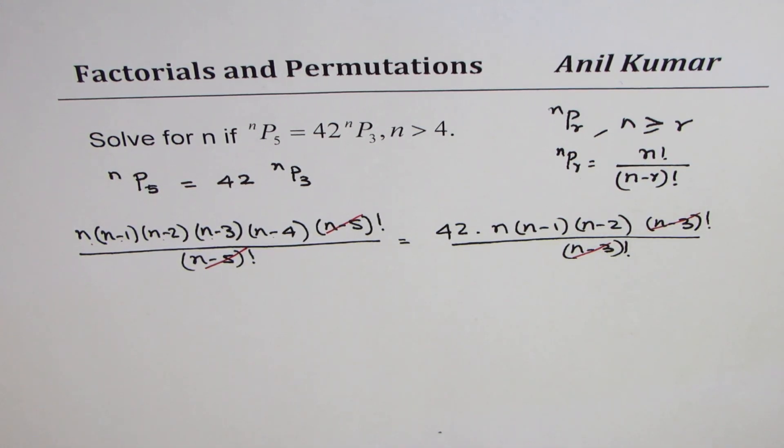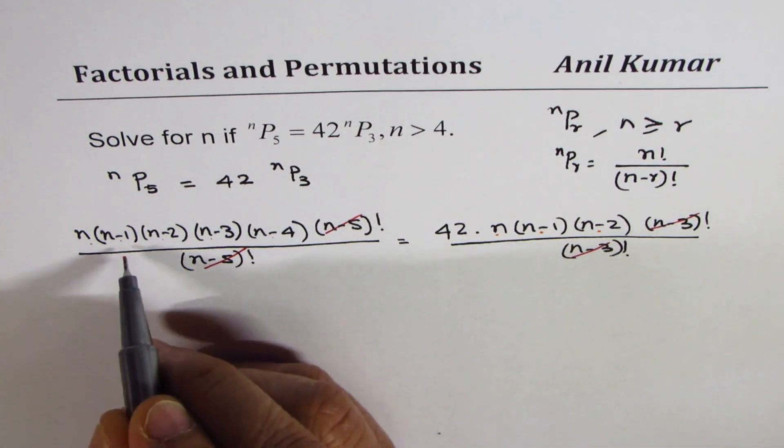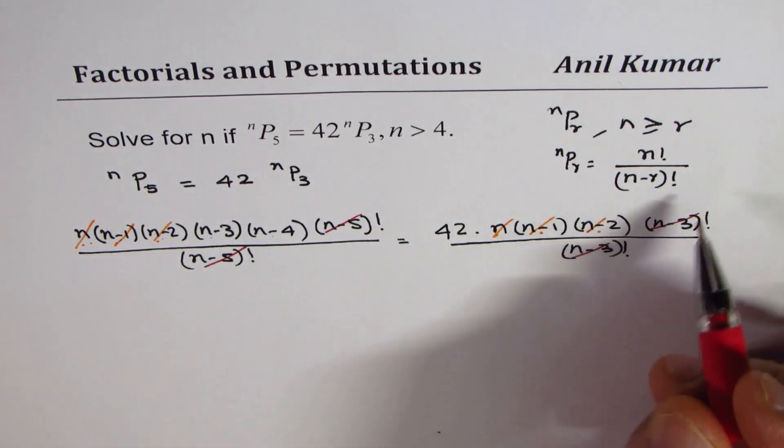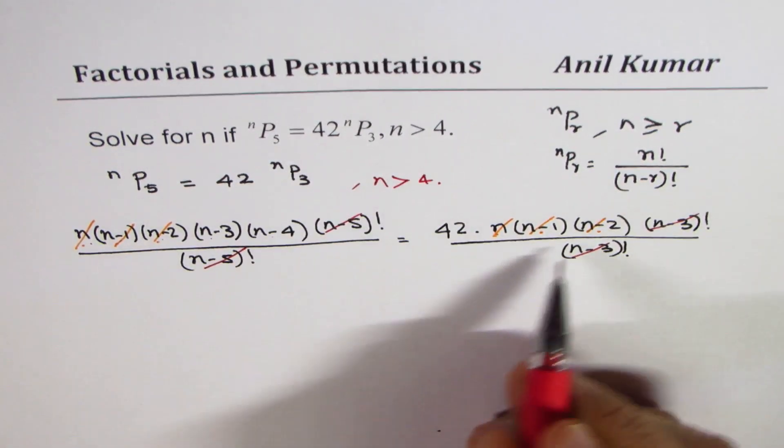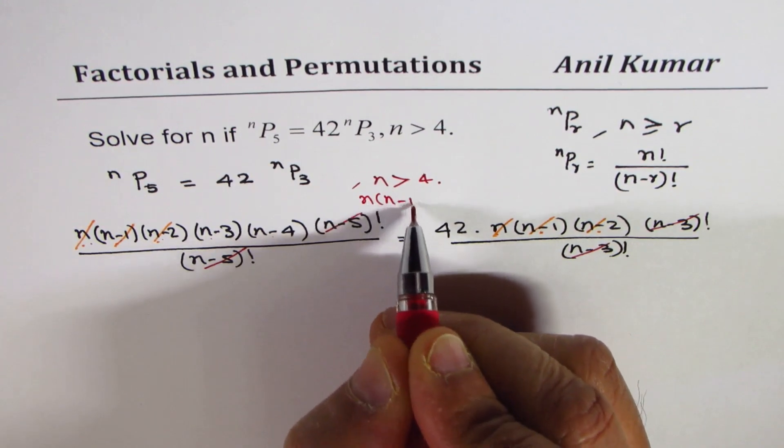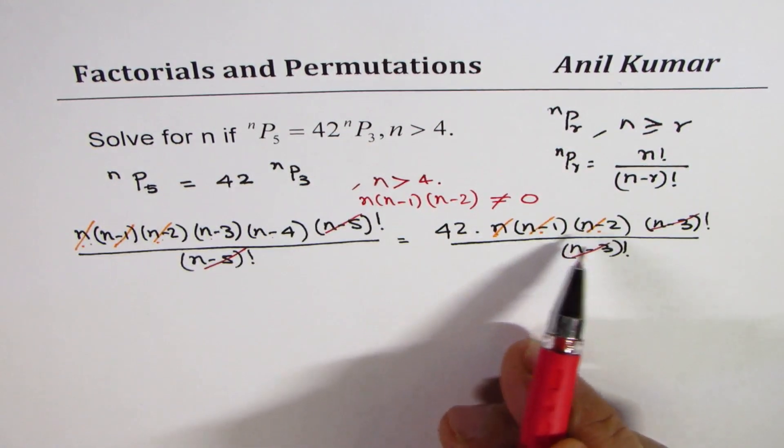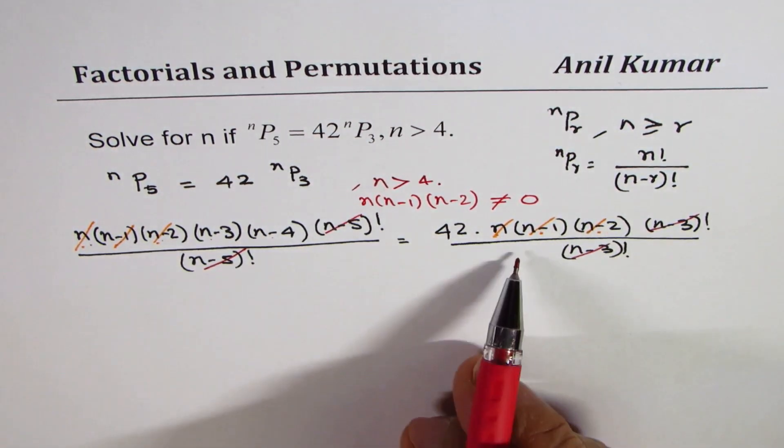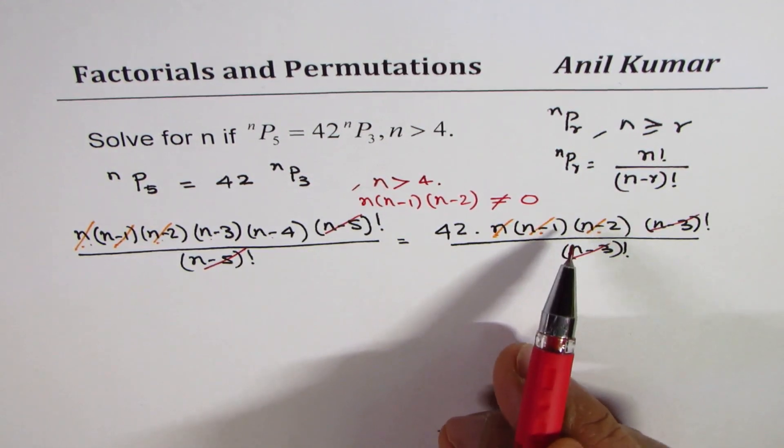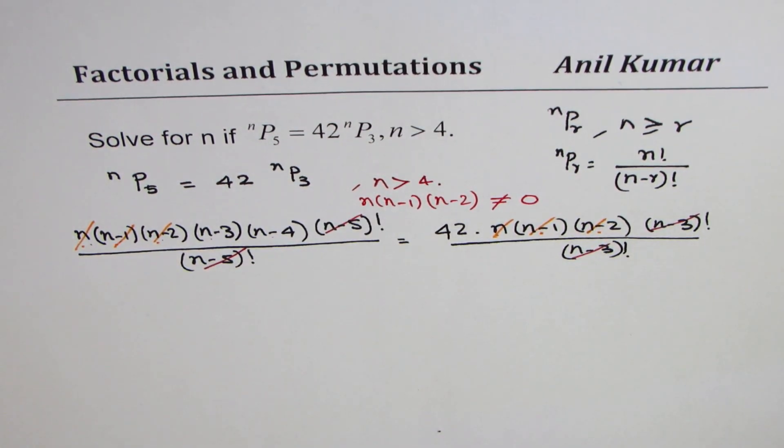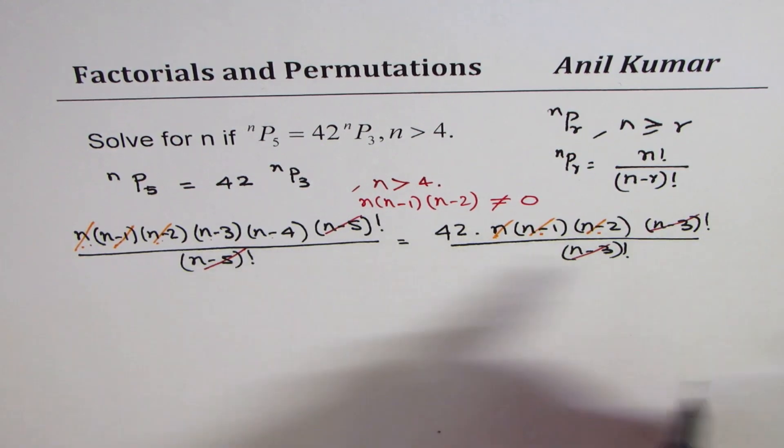Now, we could actually from both sides also cancel out n, (n-1), and (n-2). As we know n is greater than 4, and therefore n times (n-1) times (n-2) is never equal to 0. That is why we are canceling them out. Canceling means dividing both sides by this term. You cannot divide by 0. So since we are absolutely clear that n is greater than 4, we can do this. I hope this point is well taken care of.